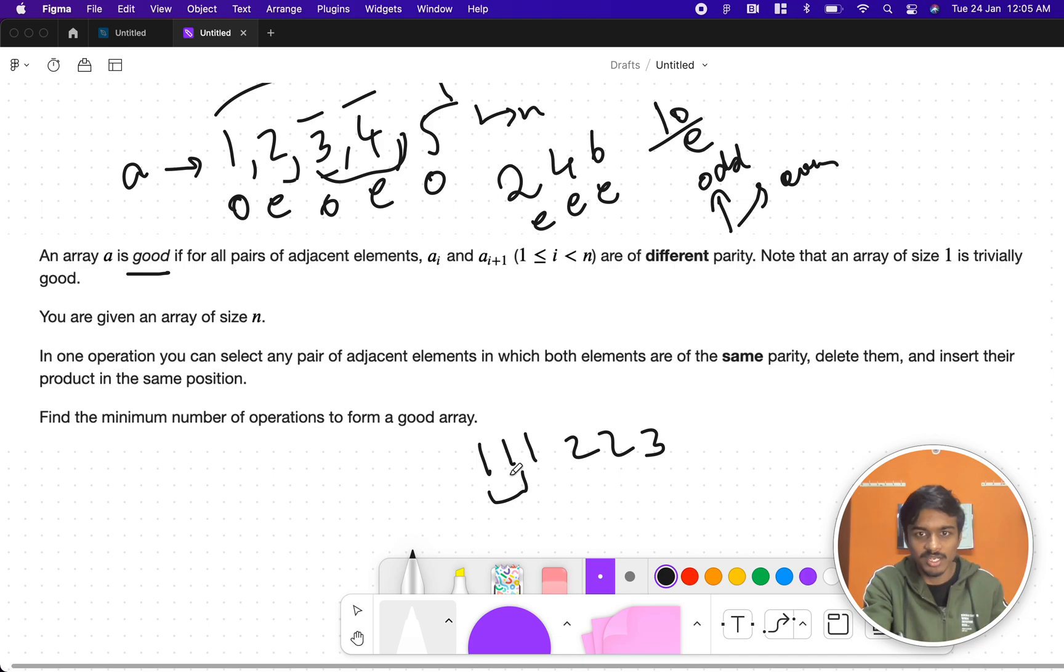Delete them and insert their product in the same position. 1, 1 you delete it and insert their product, that is 1 again to the same position. Okay I can do it, that is 1 operation. Find the minimum number of operations to form a good array. They gave you a rule to perform and eventually at the end the array should be of this format: odd, even, odd, even. Or even, odd, even, odd.